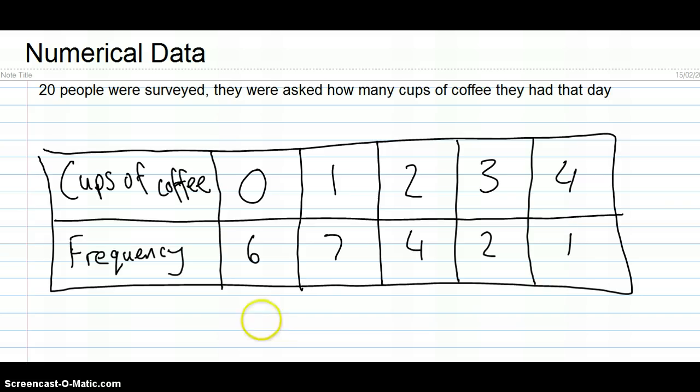We call this kind of presentation of data a frequency distribution table. And in this particular case, the data that we've got is called ungrouped data. And what ungrouped data means is that for each of the possible scores, in this case zero, one, two, three, four cups of coffee, those are the possible scores. Each of those scores is a group on its own. So this is one group, that's another group, that's another group.